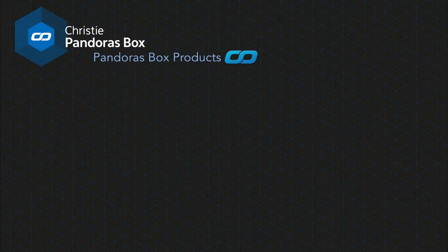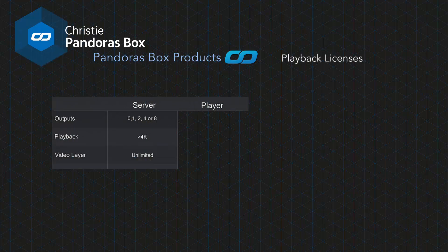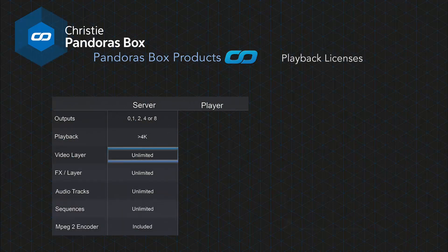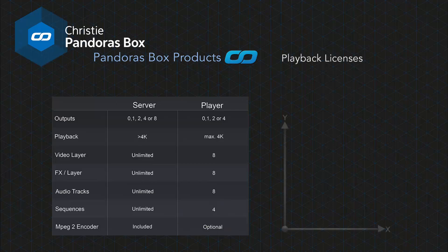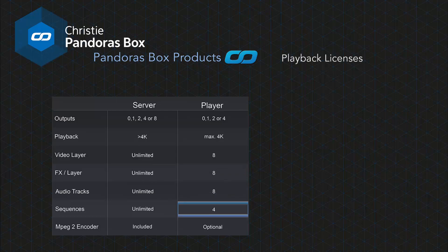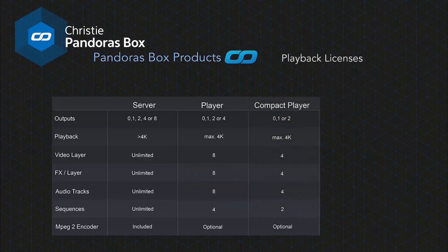The Pandora's Box product range consists of multiple different license types. The first two playback licenses are called Server and Player. The Server license allows for an unlimited amount of video layers, a full 3D environment, and the full spectrum of effects. The Player license is limited to a 2D environment and also limited in the number of layers, sequences, and effects. In addition to the Player, there is also a Compact Player license that only comes with its own hardware.